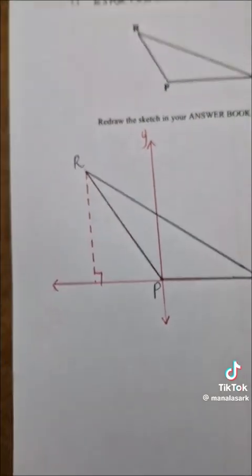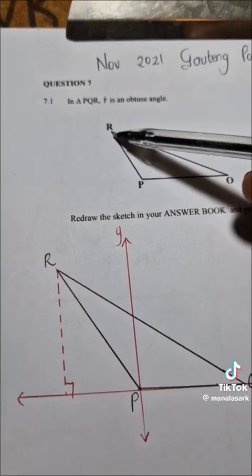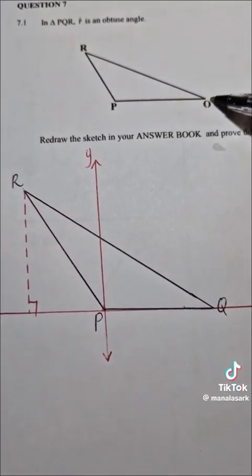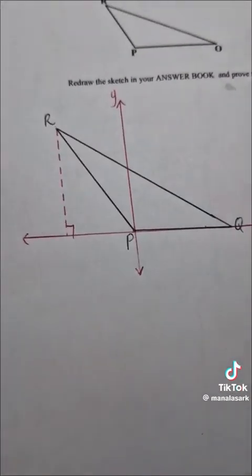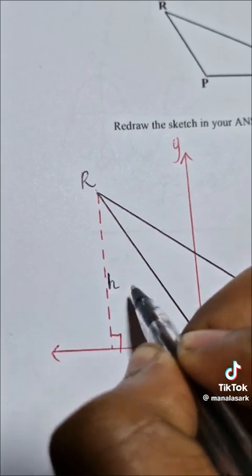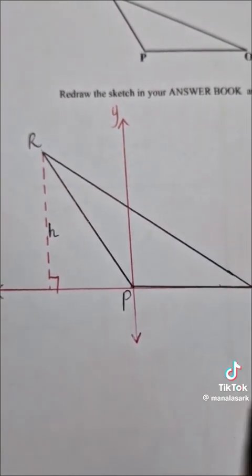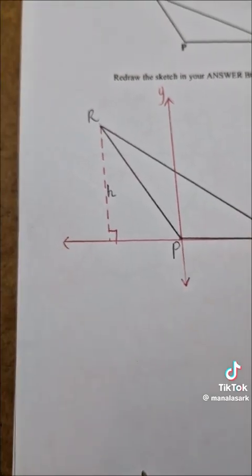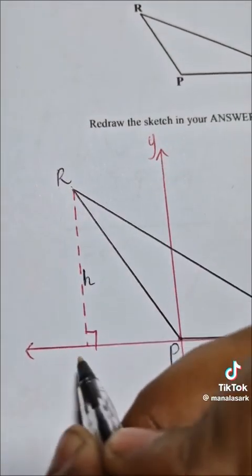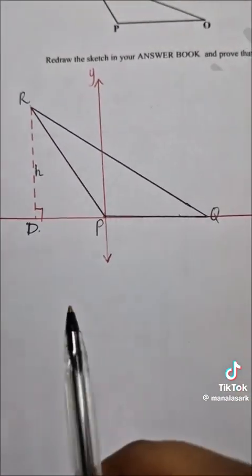My construction takes this angle and puts it on the origin, then this one overlaps the Cartesian plane to the negative side, and this line PQ lies along the x-axis. That's my construction. Afterwards I create the height such that the height is at right angles with the x-axis. From here I'll start — let's call this point D, so RD. It needs a label; it's best that way.